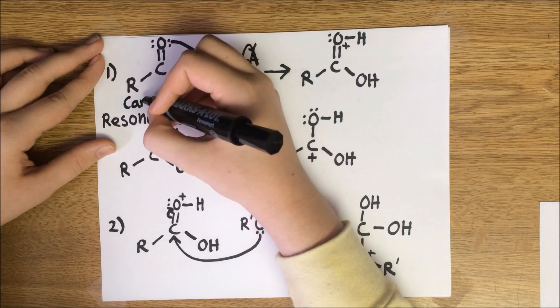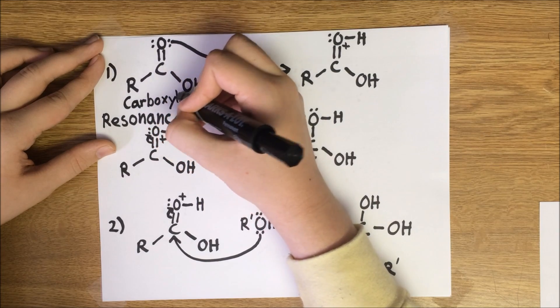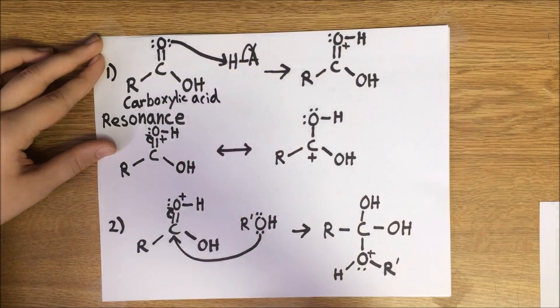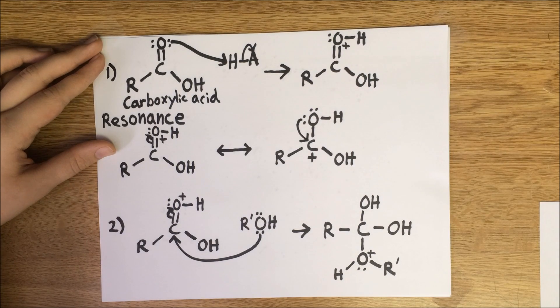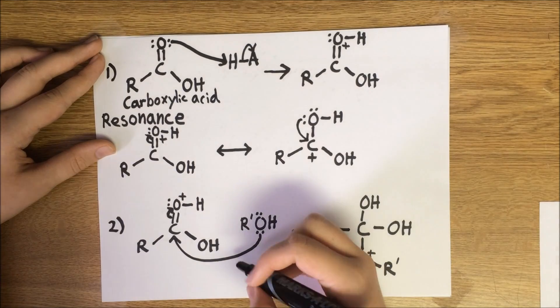In review, we start with a carboxylic acid and protonate it with another acid. The resulting ion is stabilized with resonance, which helps it react with an alcohol to form a tetrahedral intermediate.